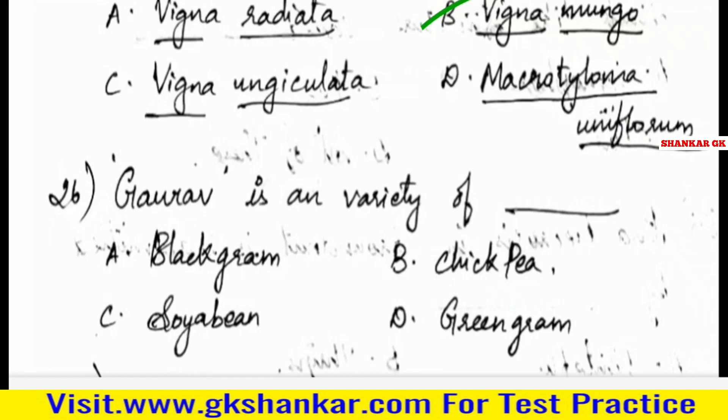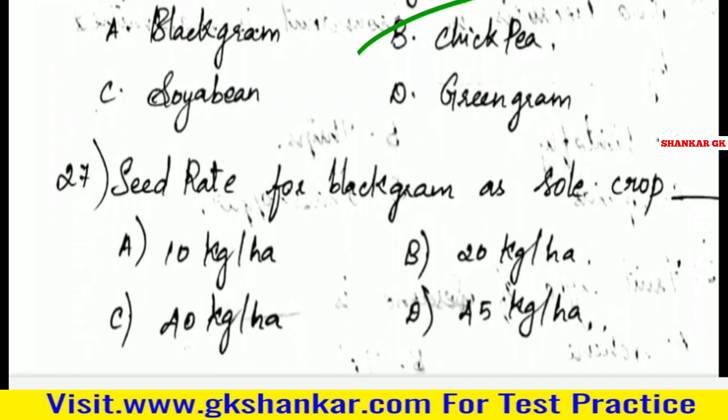Twenty-sixth question: Gaurav is a variety of — A. Black gram, B. Chickpea, C. Soyabean, D. Green gram. Answer: B. Chickpea.